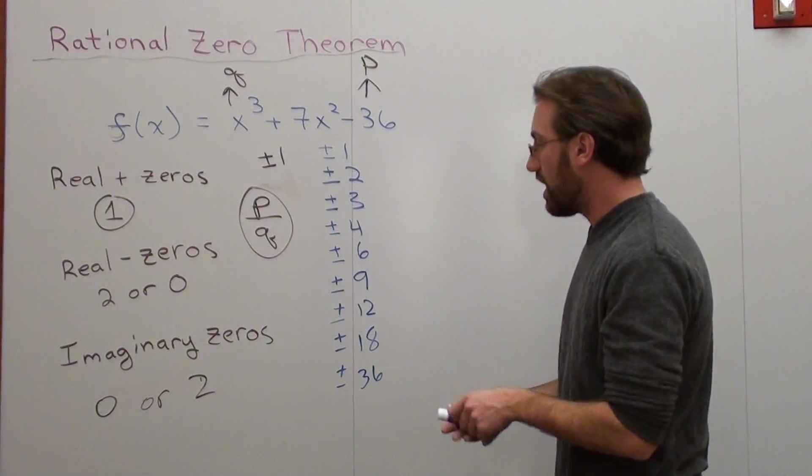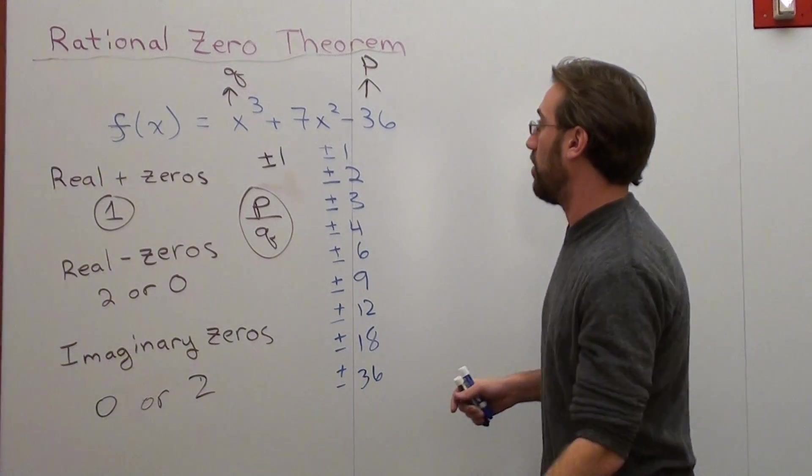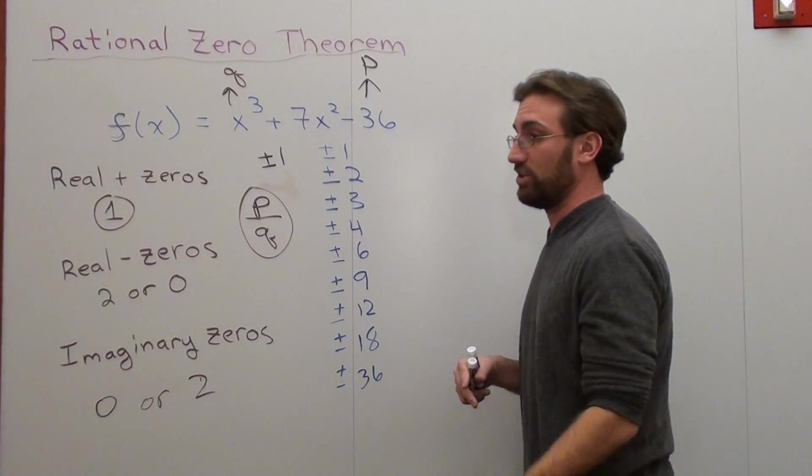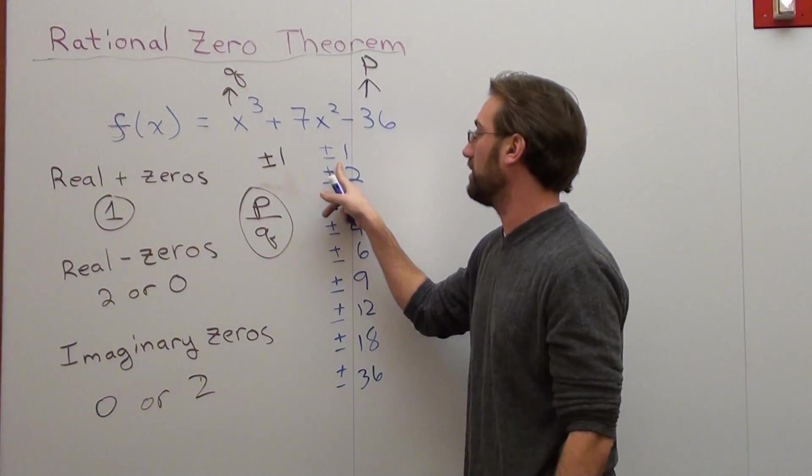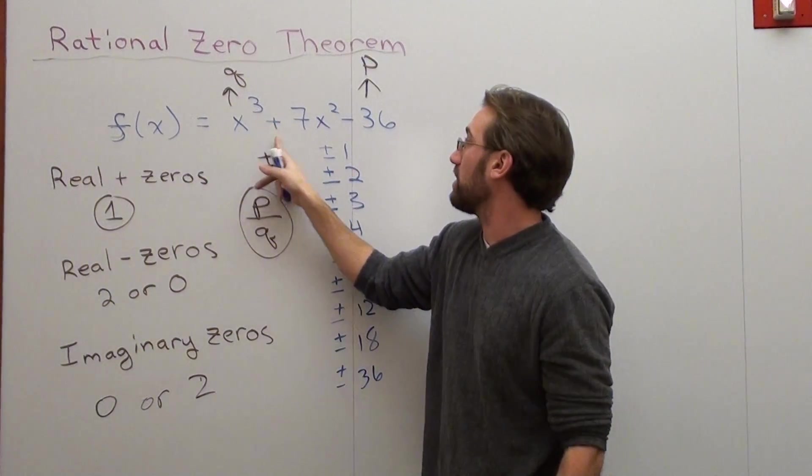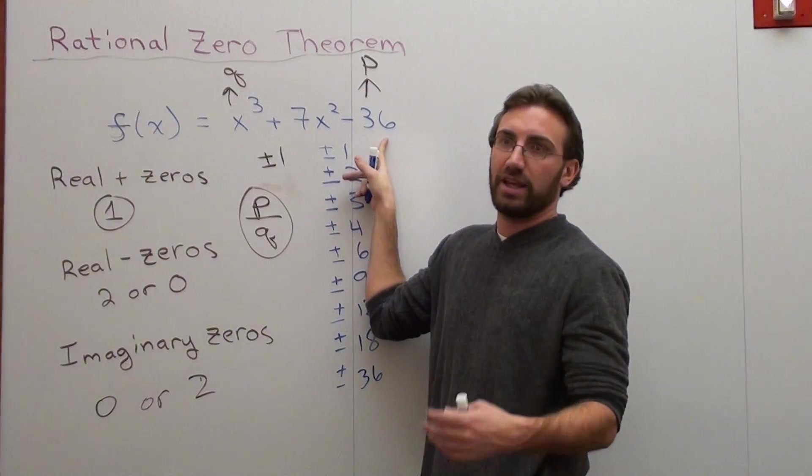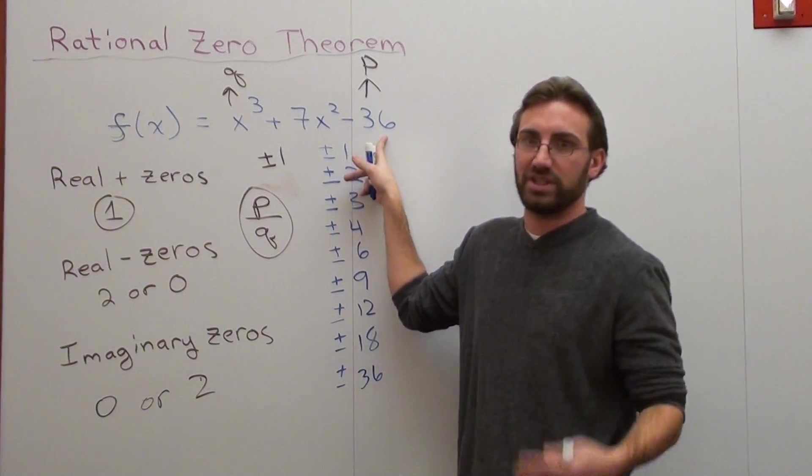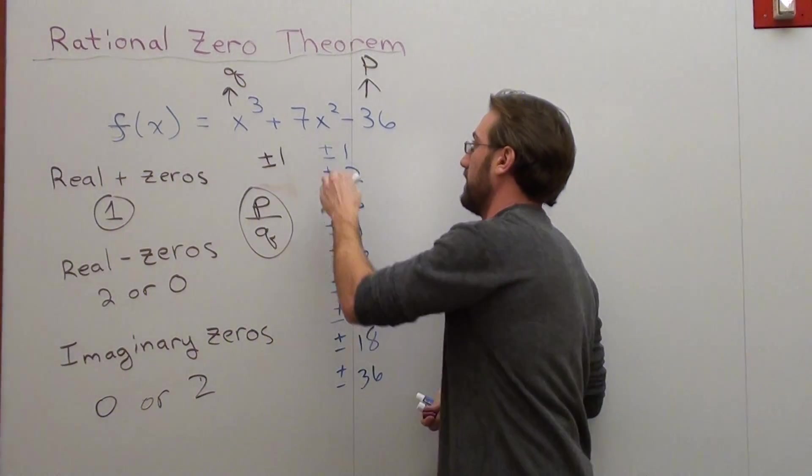Finito. So what I'm going to do really quickly is check them and I'm going to do it in my head. Hopefully that will be not too bad to follow, but usually I would write it out. Okay, I want to check f of one. So I plug in a one here. One cubed is one plus seven times one squared is seven. So one plus seven minus 36 is eight minus 36, which is negative 28. That's not going to work. Okay, so one's not going to work.